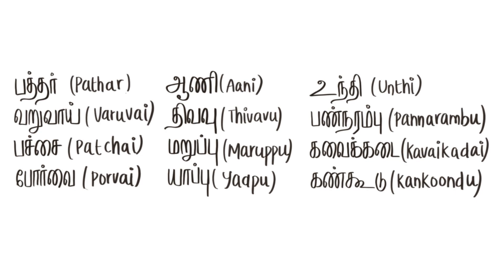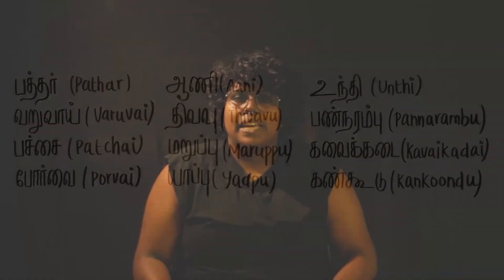Additional parts of the periyal include undhi, pandhirambu, kavai, kadai, and kankundu. Periyal is considered the most technologically advanced of all the yal types during that period.